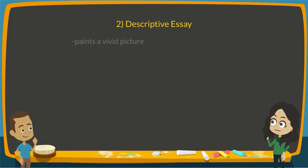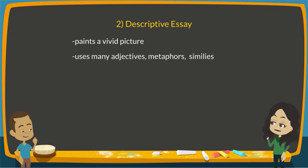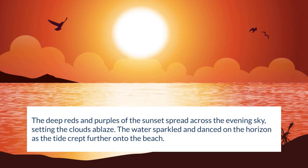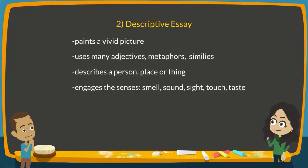A descriptive essay paints a vivid picture with words — it uses lots of adjectives and describes a person, place, or object in a lot of detail. For example, listen to this extract: 'The deep reds and purples of the sunset spread across the evening sky, setting the clouds ablaze. The waters sparkled and danced on the horizon as the tide crept further onto the beach.' Wow, I like that — I feel like I'm there.